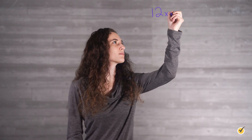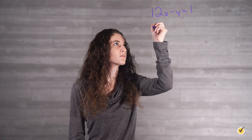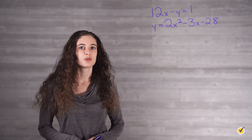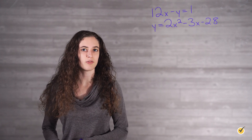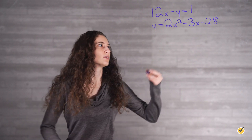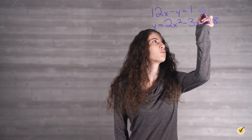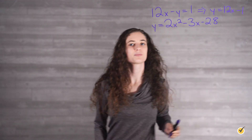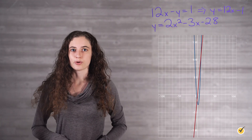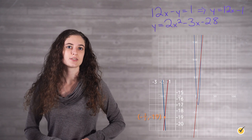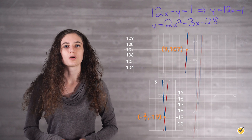Solve this system graphically and then algebraically. In order to graph our linear equation, we want to first rearrange it so that y is by itself on one side. We can do this by adding y and subtracting 1 from both sides, which gives us y equals 12x minus 1. Now we are able to graph both equations, and our graph will look like this. We can see that our graphs intersect at the points negative 3 halves, negative 19 and 9, 107.